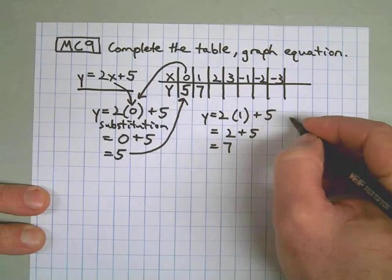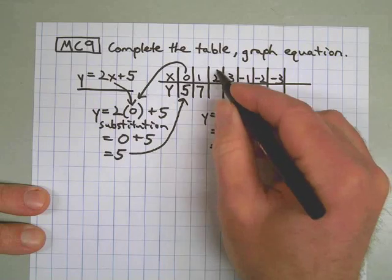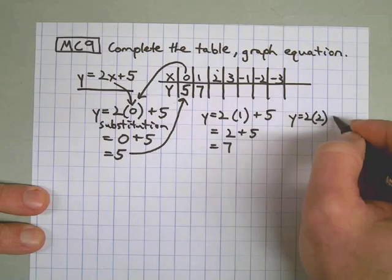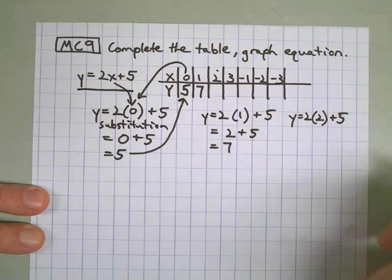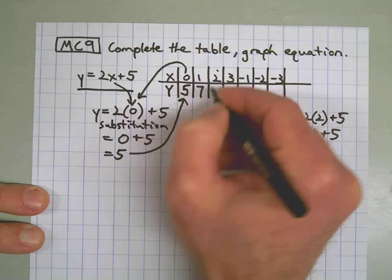I think I have room to squeeze one more over here. 2 times 2 plus 5. 2 times 2 is 4 plus 5 is 9.